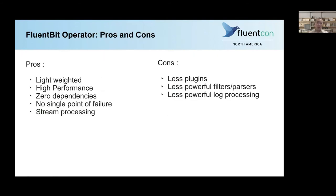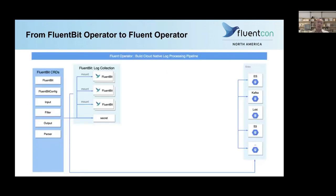FluentBit, as we know, is lightweight, high performance, and has zero dependencies with no single point of failure. But it also has some disadvantages — it has much fewer plugins than FluentD, and less powerful filters and parsers. So in some cases FluentD is still needed. We decided to add FluentD to the existing FluentBit operator and rename it to Fluent operator.